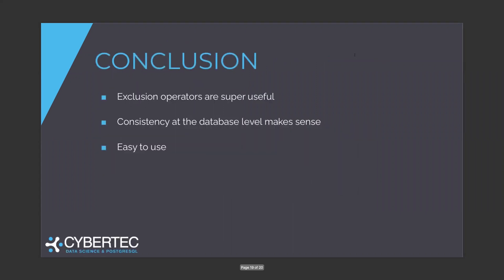In conclusion, it's a super powerful feature, it's very easy to use, and it's super useful. Ensuring consistency on the database level makes sense as an additional safety net. Don't consider this to be business logic on the database — you could argue that the primary key is also business logic on the database, which of course it isn't. And again, it's very easy to use.